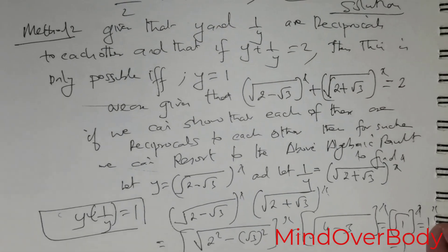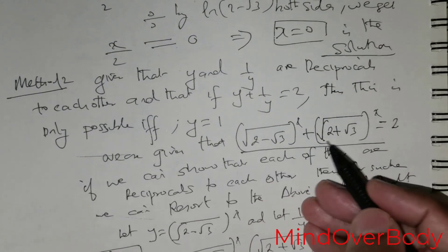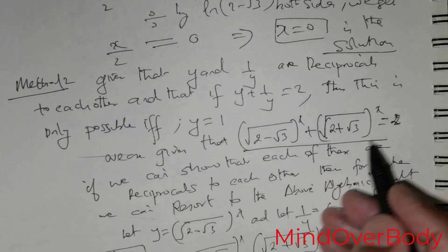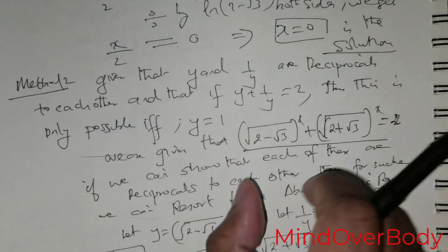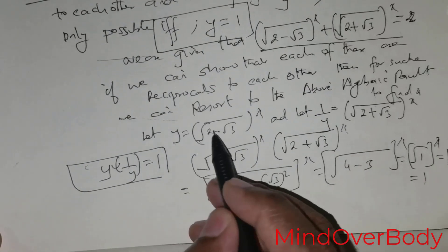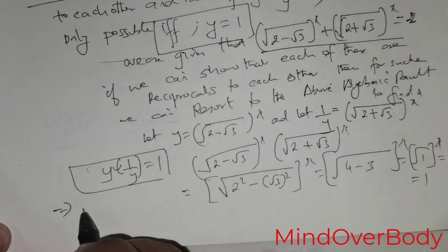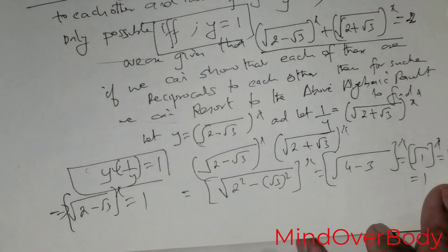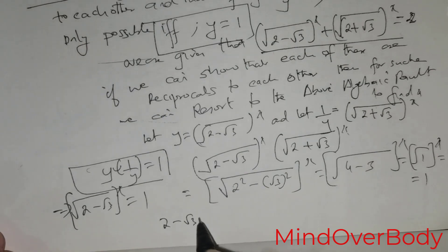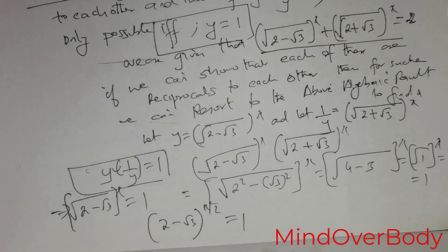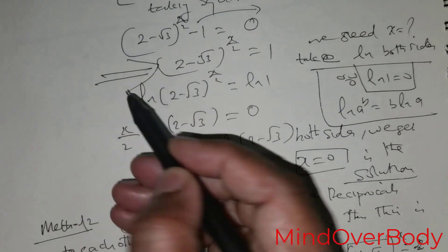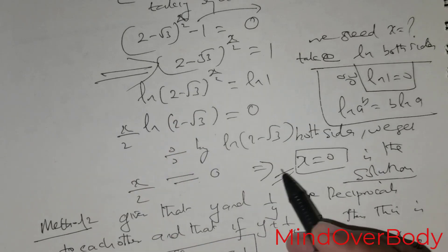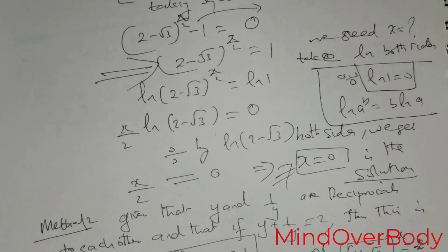Since the problem states that root of (2 - root 3) raised to the power x, plus root of (2 + root 3) raised to the power x, equals 2, and since these two are reciprocals, this is only possible if and only if y equals 1. So root of (2 - root 3) raised to the power x equals 1, which means (2 - root 3) raised to the power x/2 equals 1. This immediately gives x equals 0. That is Method 2.